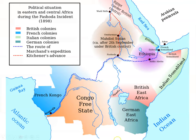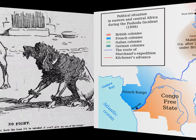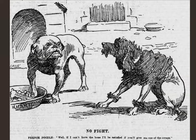This is the Fashoda Crisis. The British are working north and south, the French are working east and west, and they meet at Fashoda — this becomes a much bigger deal back in Paris and London than the actual fighting on the ground. A political cartoon shows who backs down: the big British bulldog pulls Fashoda for itself and fights off the French poodle.